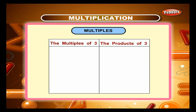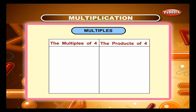The multiples of 3 are: 3 into 1, 3 into 2, 3 into 3, 3 into 4, 3 into 5 and so on, and the products are 3, 6, 9, 12, 15 and so on. The multiples of 4 are: 4 into 1 which is 4, 4 into 2 which is 8, 4 into 3 which is 12.